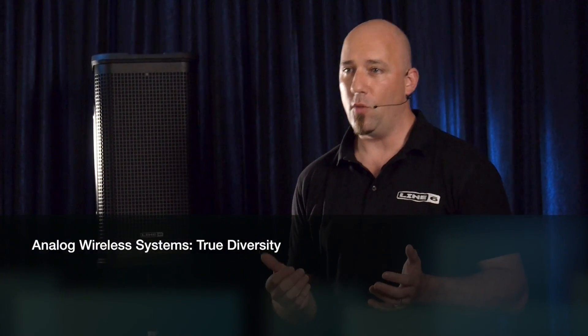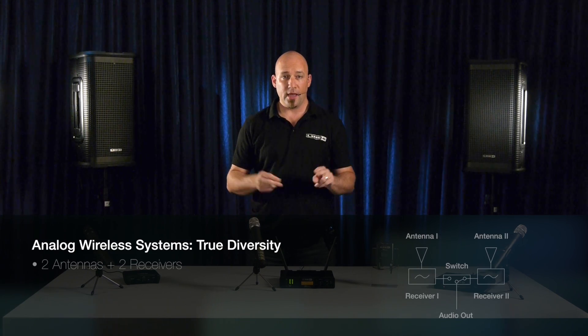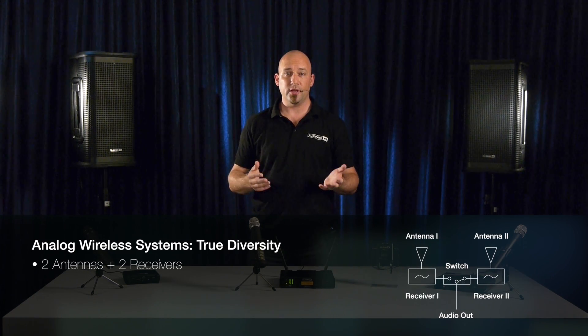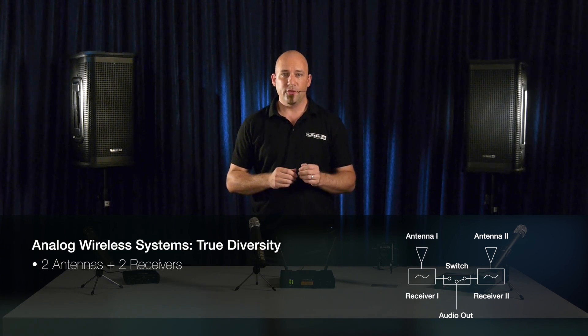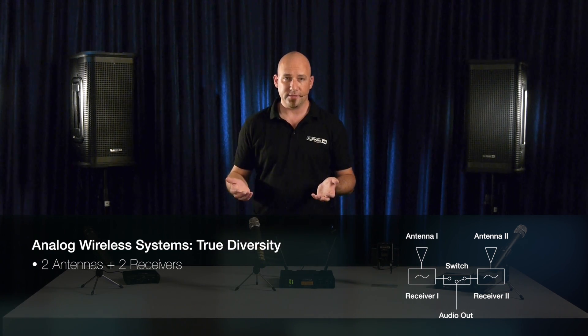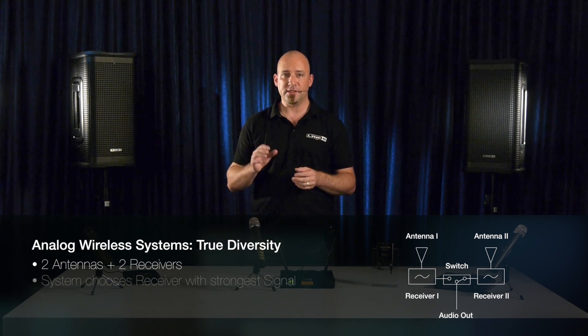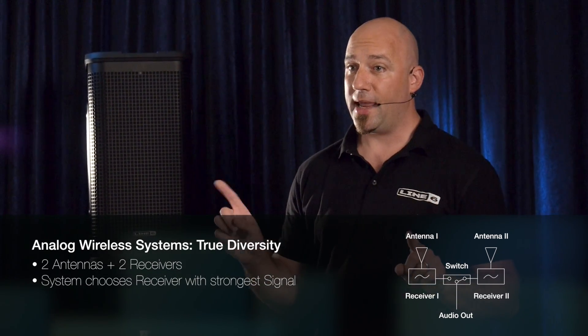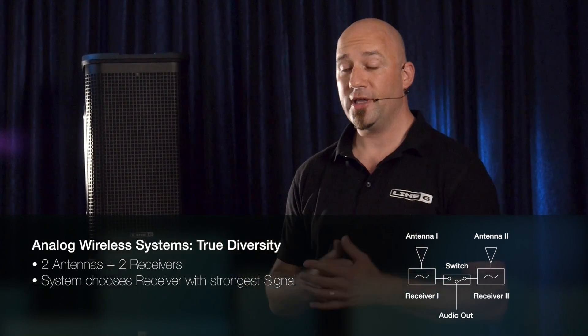The term true diversity is often used to describe a feature of many analog wireless systems that utilize two antennas and two receiver circuits. When the signal at one antenna is weak, the signal at the other antenna may not be as affected, and the wireless system then selects the audio signal from the receiver that has the strongest signal.